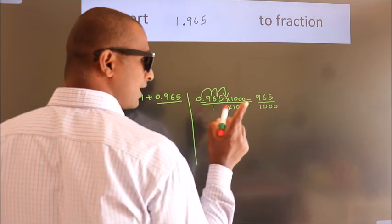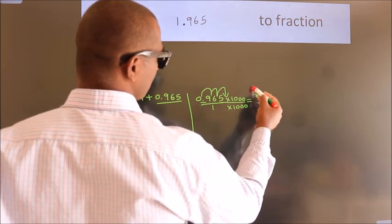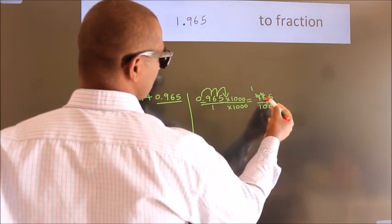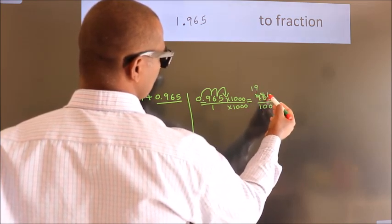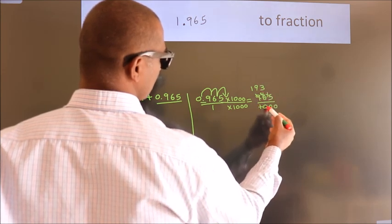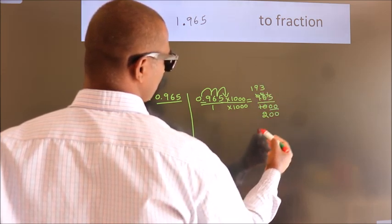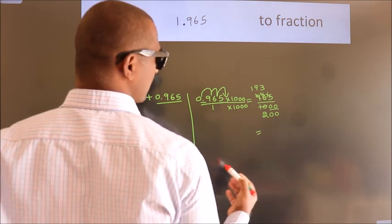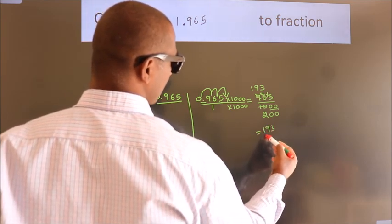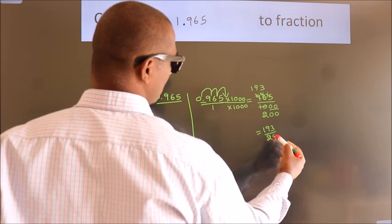Now I cancel with 5. 5 into 965 is 193, 5 into 1000 is 200. So the fraction we got is 193 by 200.